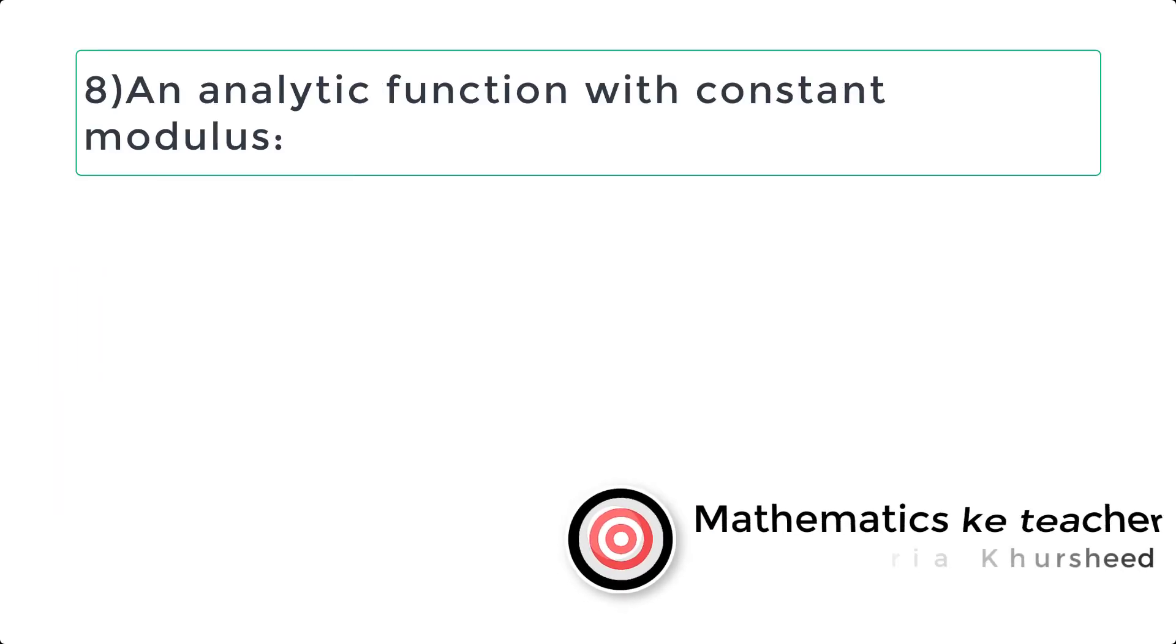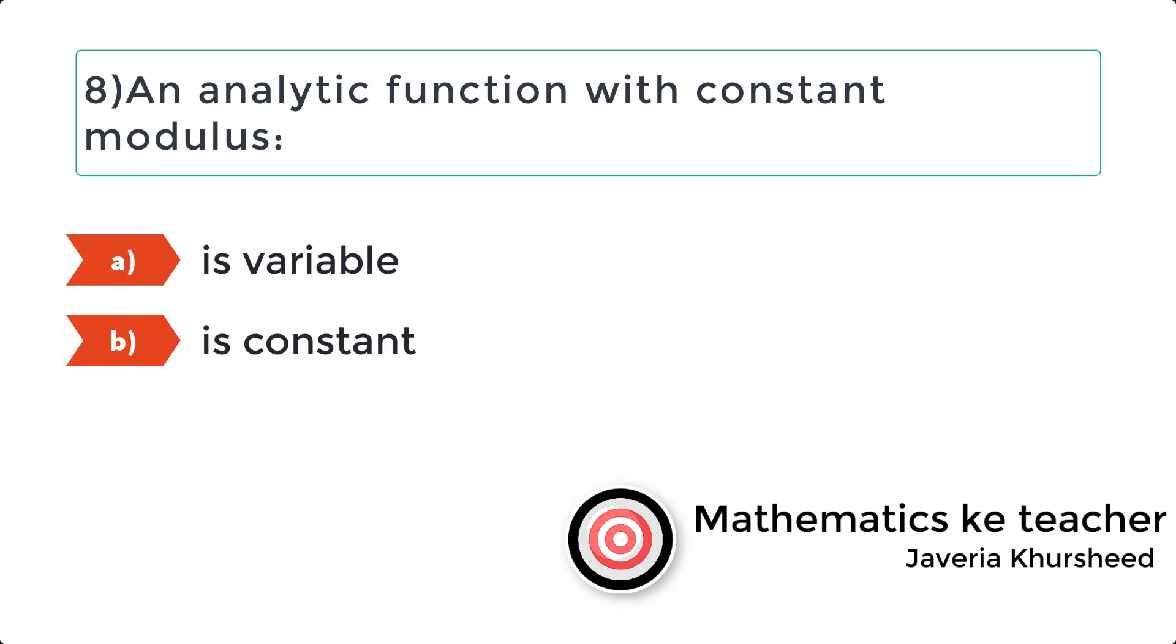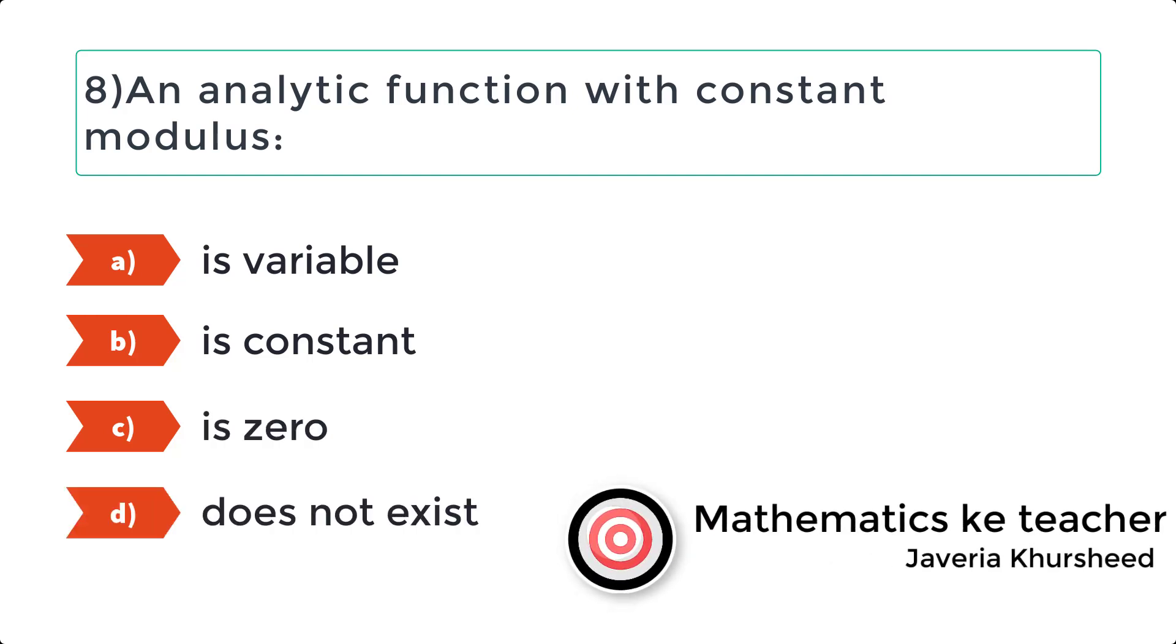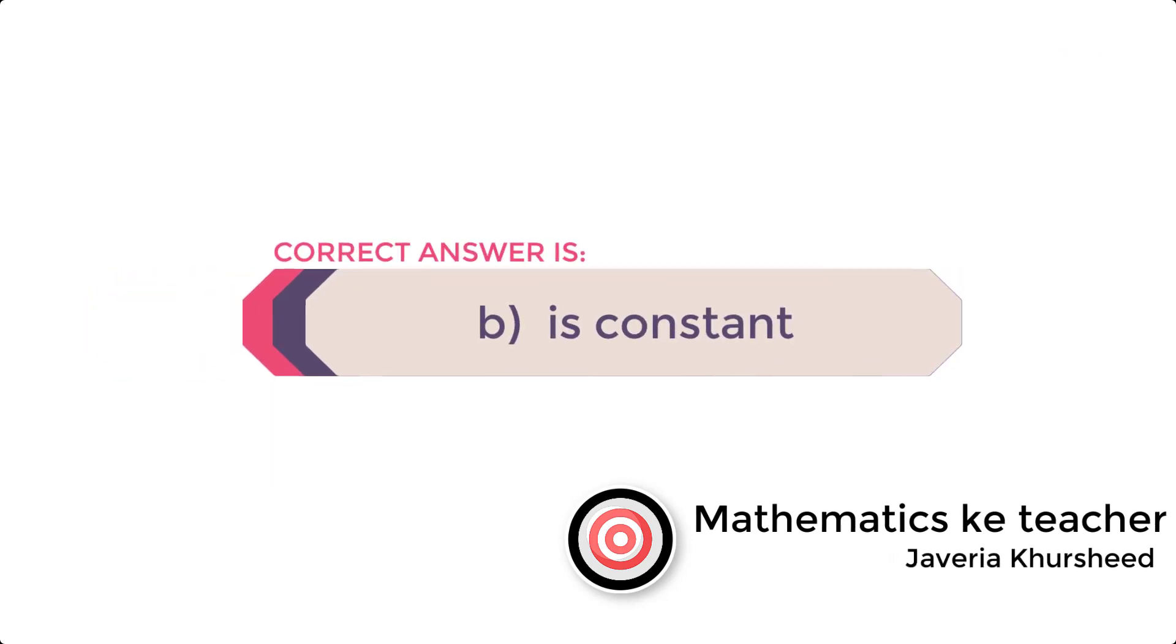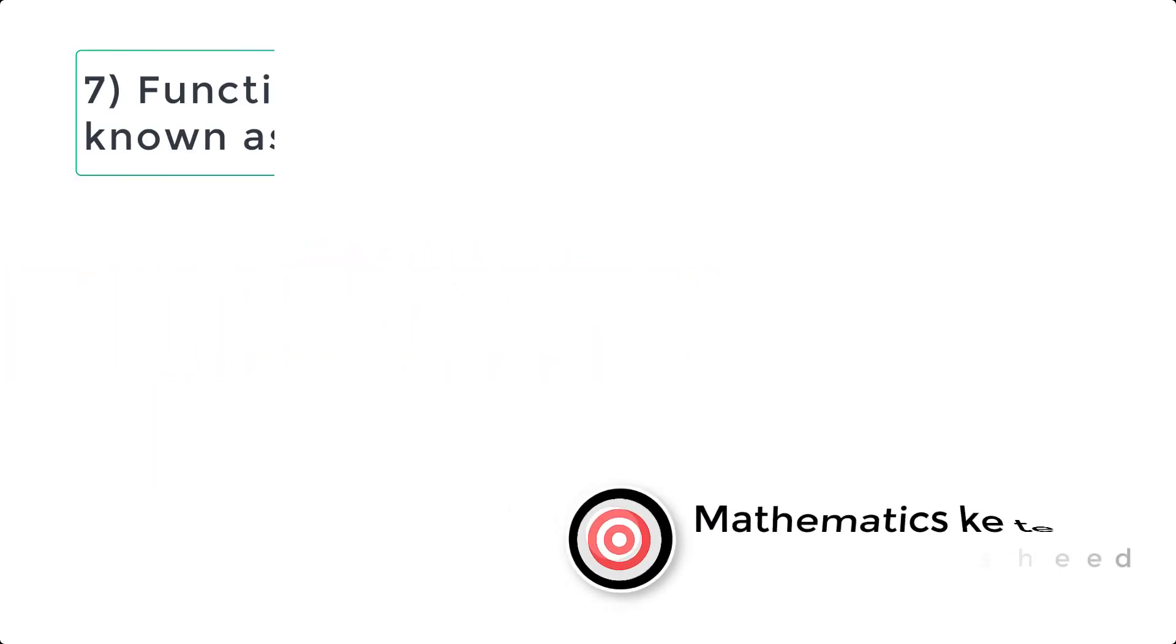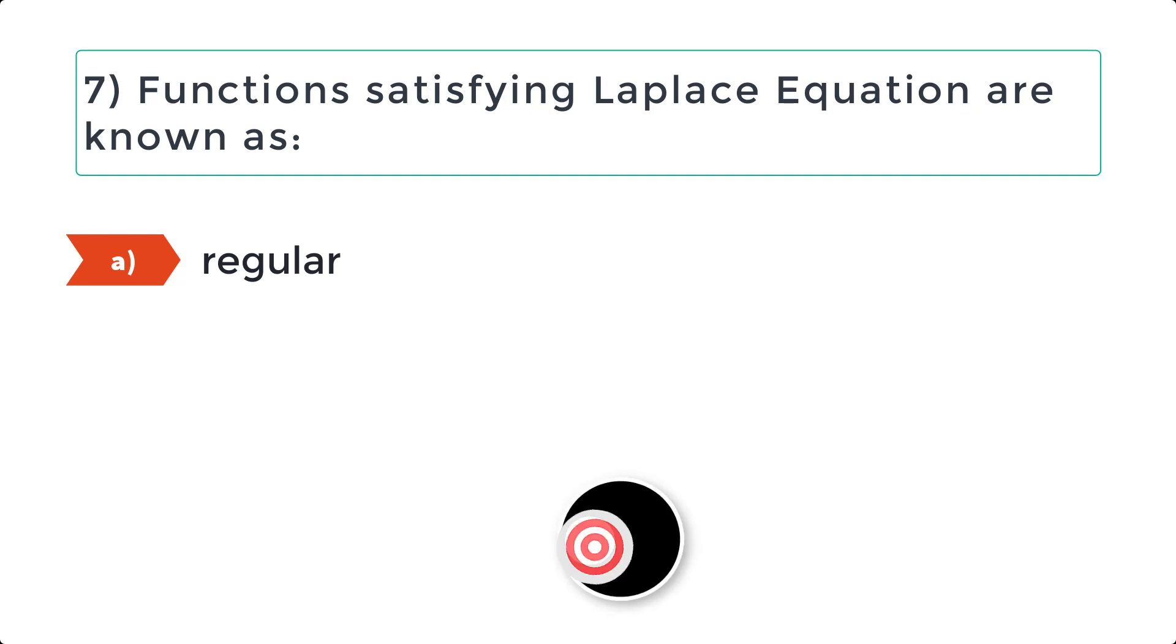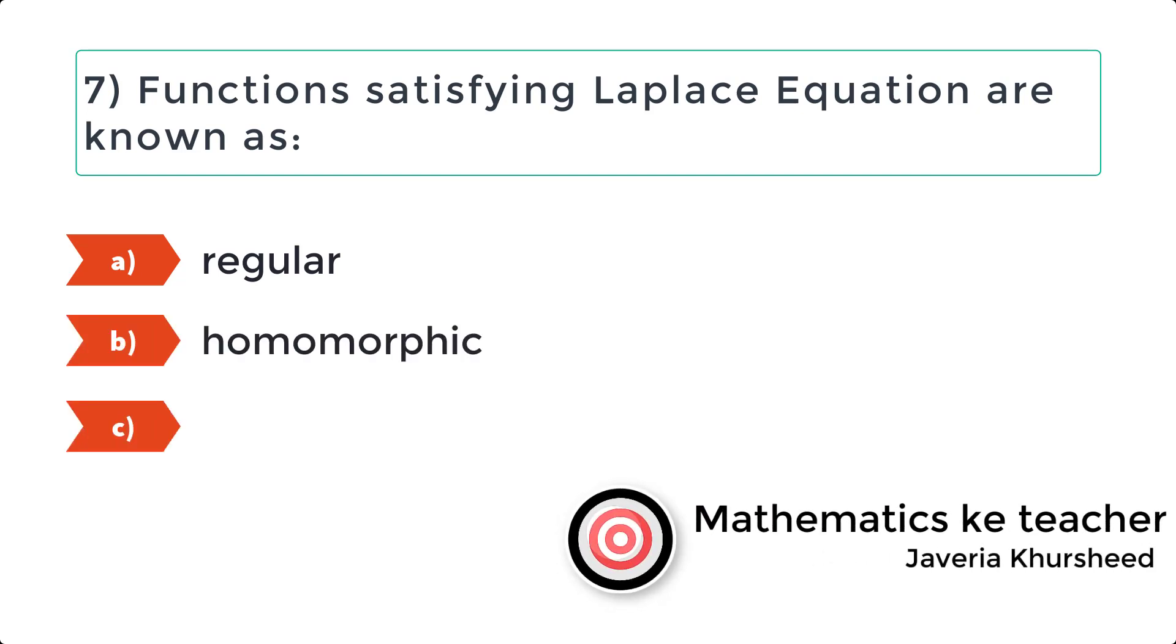Question 8: An analytic function with constant modulus: a) Is variable, b) Is constant, c) Is 0, d) Does not exist. Correct answer is b) Is constant.